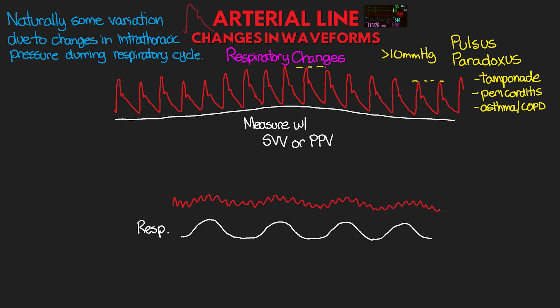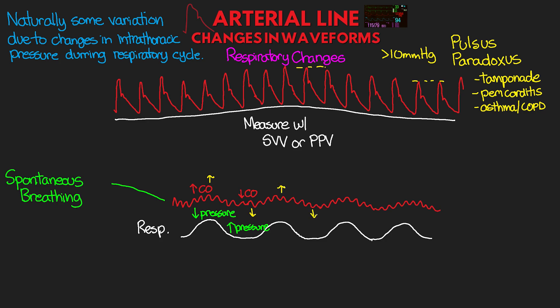The first example of these respiratory changes is that of a spontaneously breathing patient. As the patient breathes in, the intrathoracic pressure drops, leading to an increase in cardiac output and thus the size of the arterial waveform. During expiration, the pressure increases and we thus see a decrease in cardiac output and the arterial waveform as well. You can see this cycling up and down throughout the respiratory cycle.